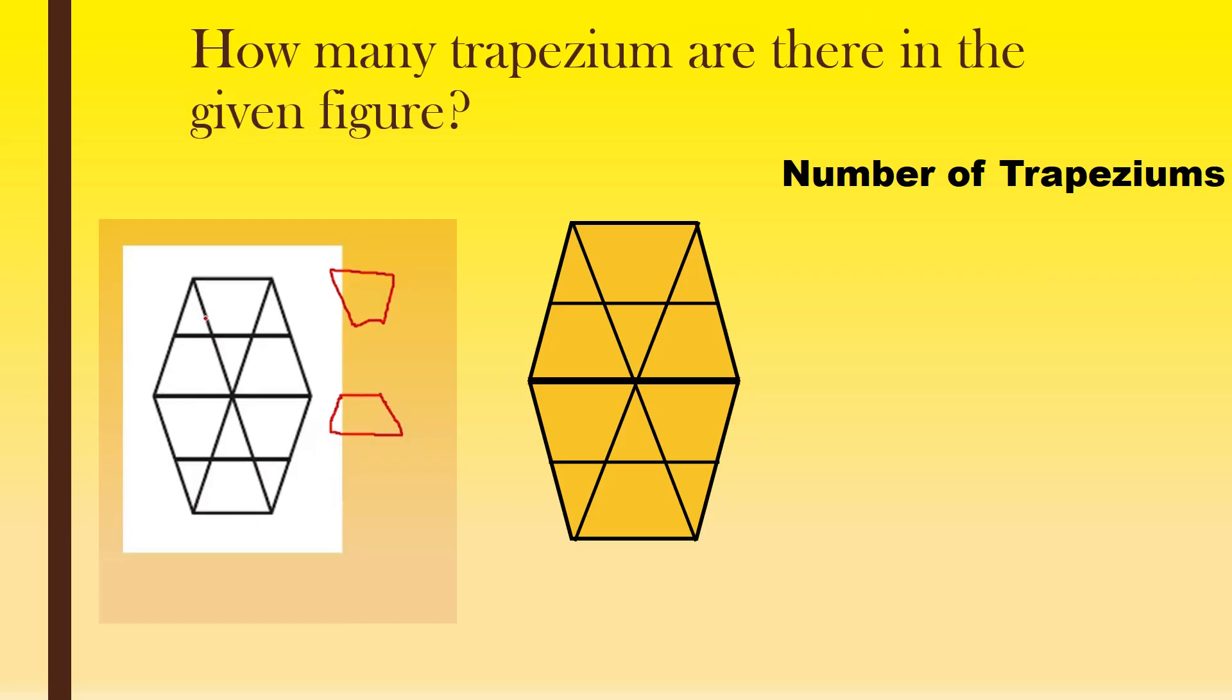A quadrilateral with at least one pair of parallel sides is called a trapezium. And here one, two, three, and this full is number four. This full is five, and it's six. So six trapeziums. The same at the bottom, six trapeziums. So six plus six, twelve trapeziums. Six like this and six like this, twelve trapeziums are there.